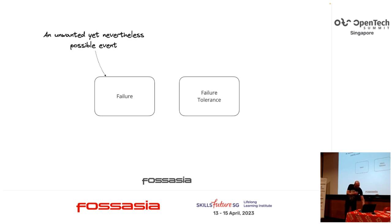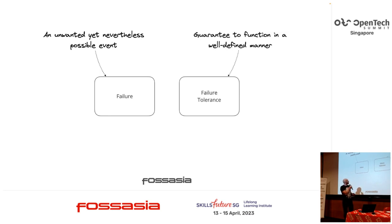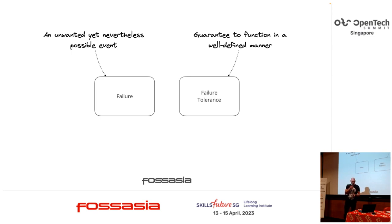A failure is an event in a system — it refers to an unwanted but nevertheless possible event. Failure tolerance is a guarantee of a system: it refers to the guarantee that the system behaves in a well-defined manner, even in the presence of failure.